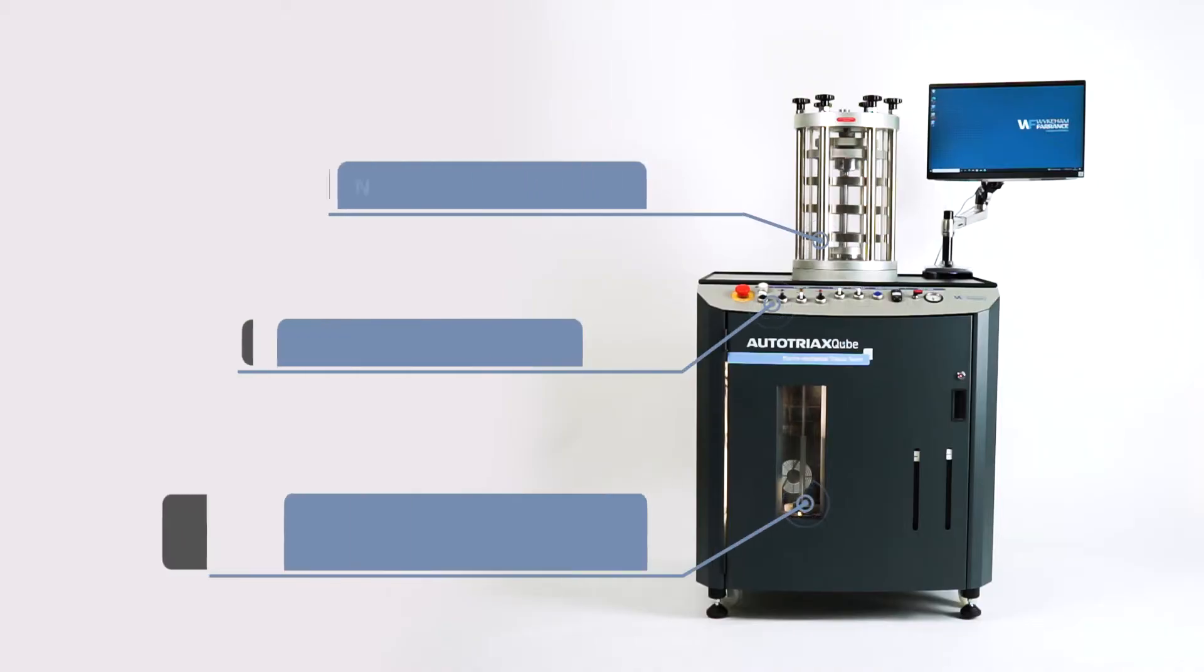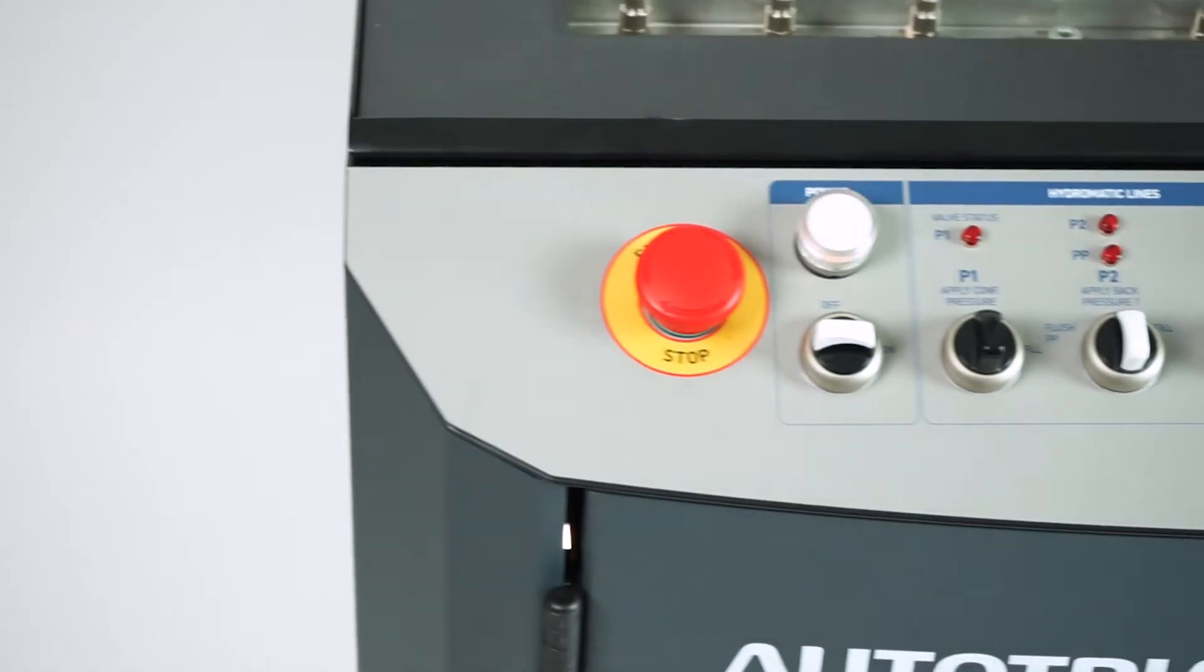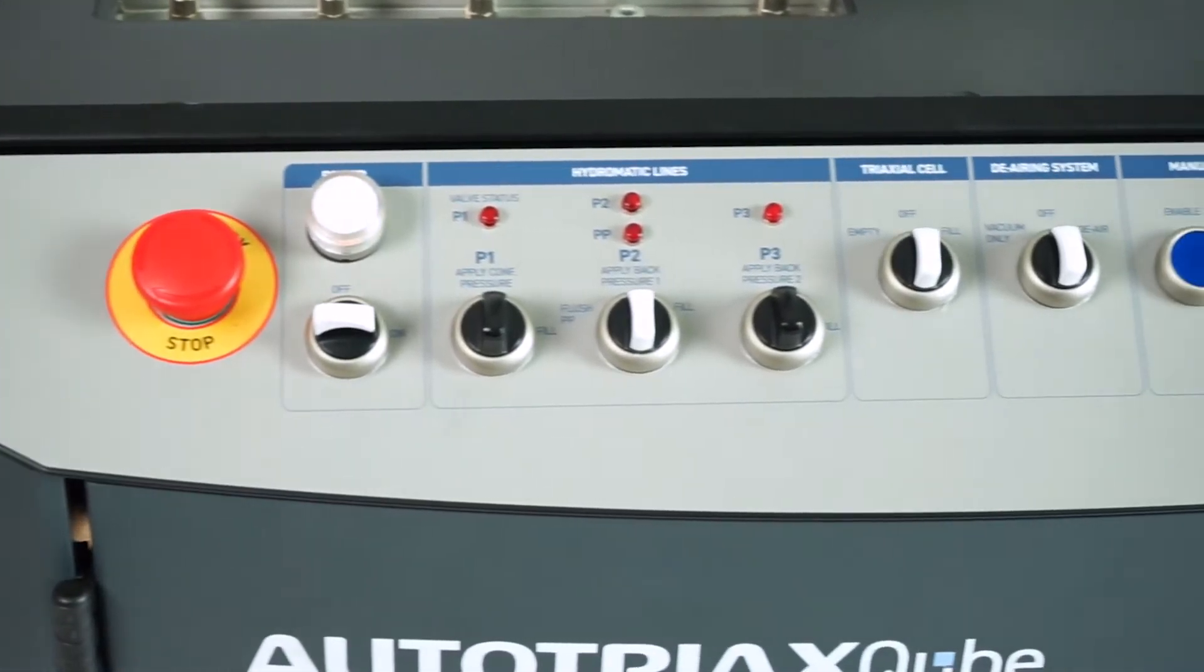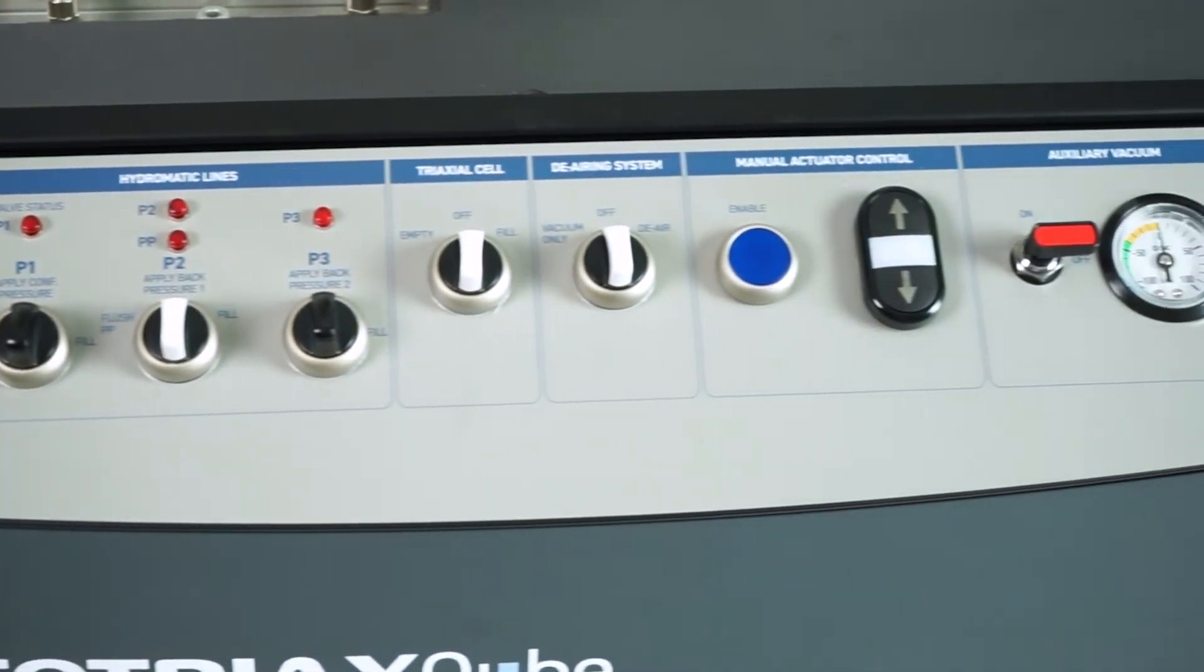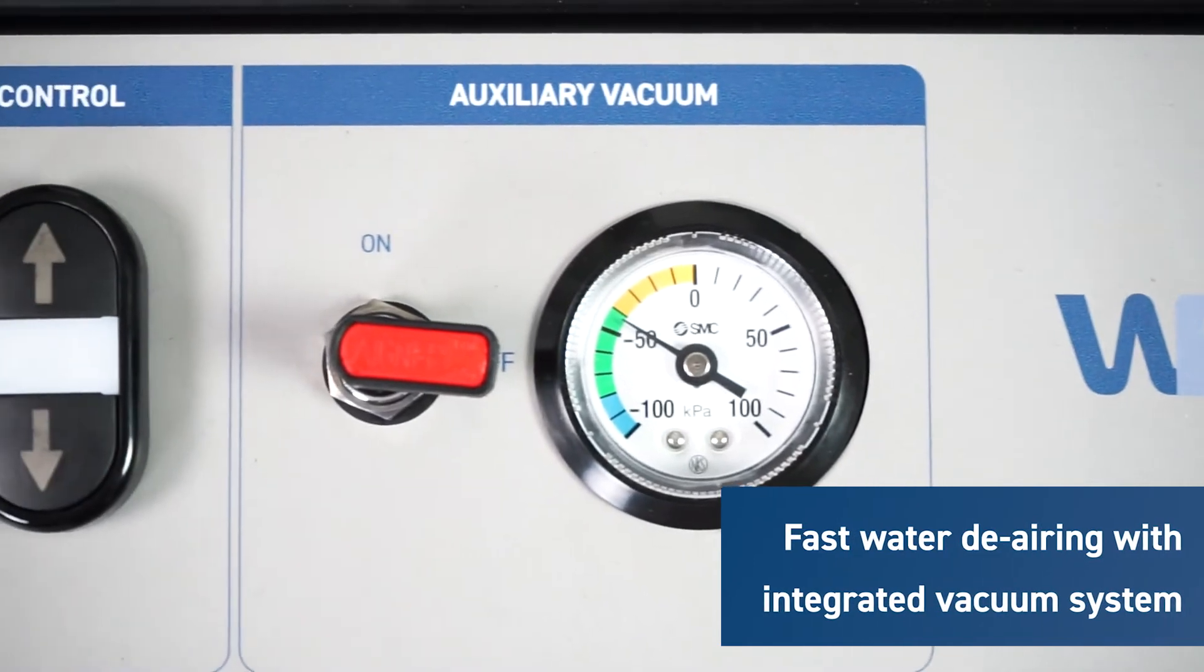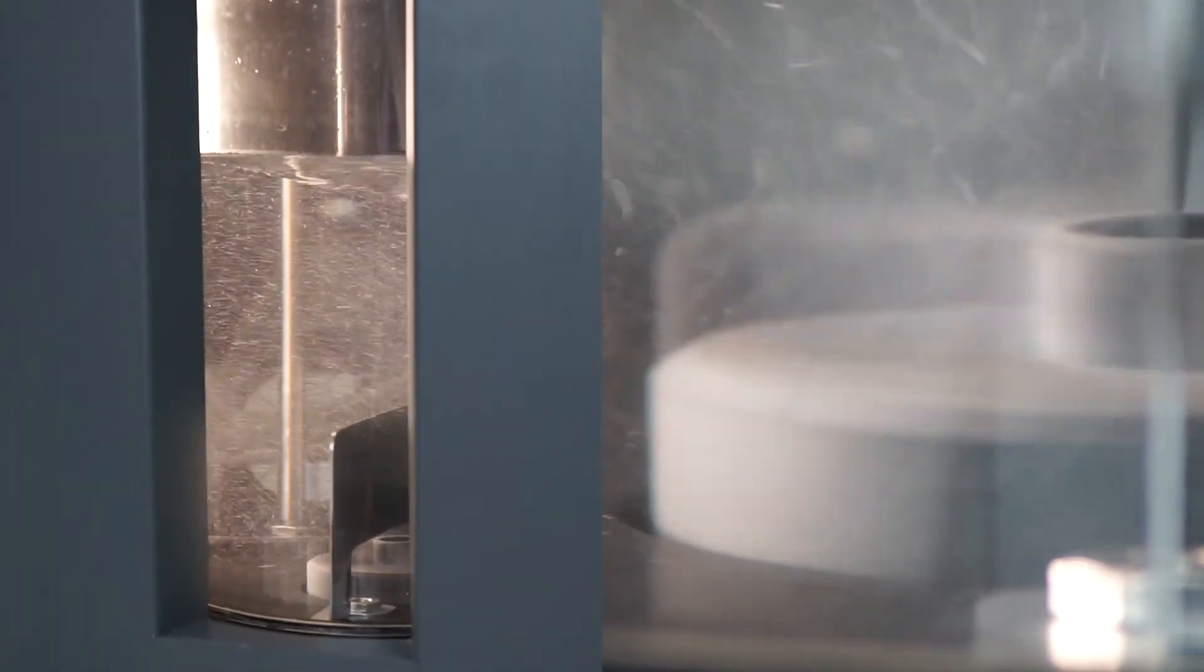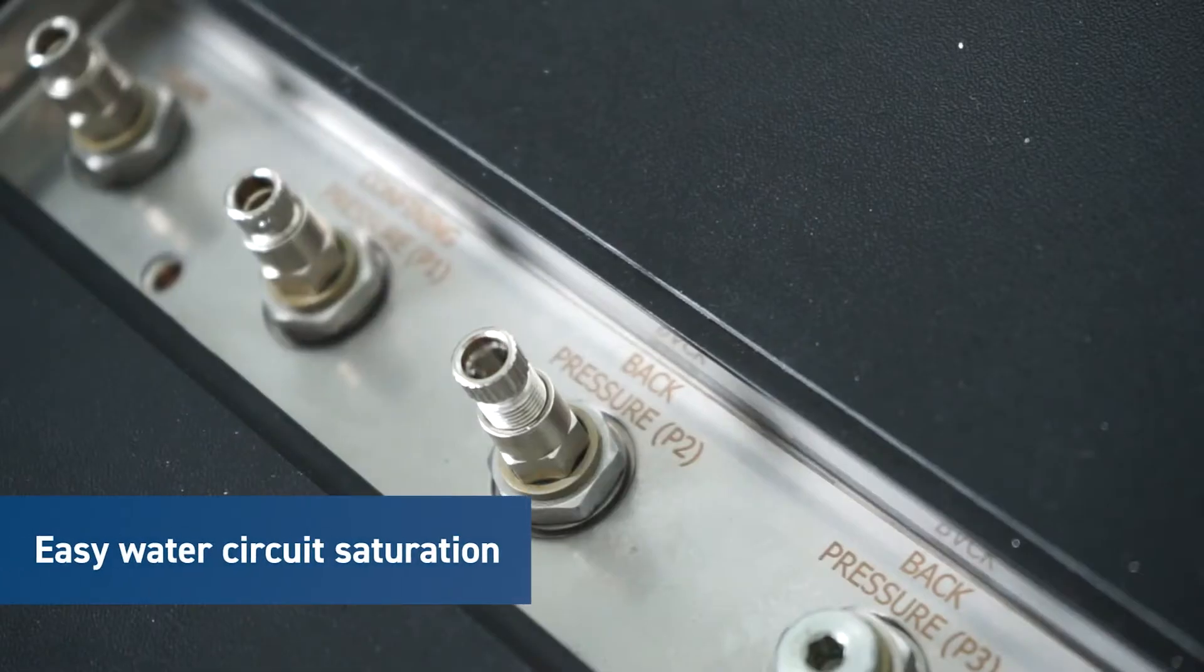With the standalone AutoTriax Cube, the following setup procedures will be much easier and faster for the operator. It is all done using the intuitive control panel. The built-in vacuum pump, tank control valves, and cavitation system will de-air the water quickly and efficiently down to levels of dissolved air acceptable for triaxial test methods.